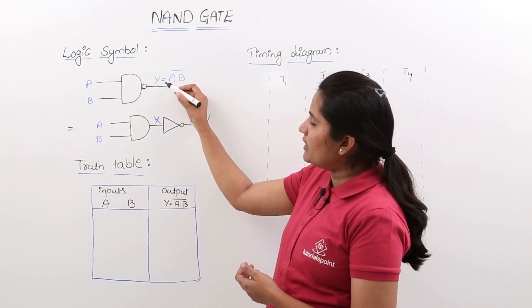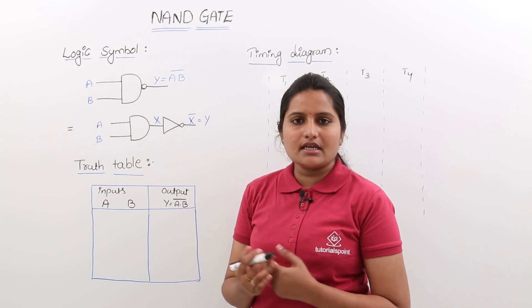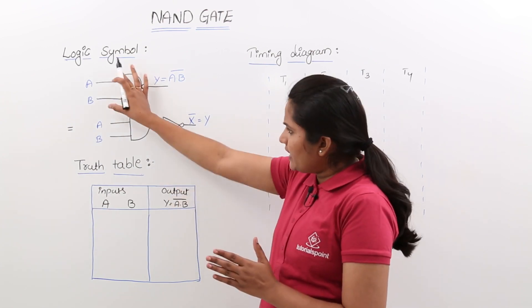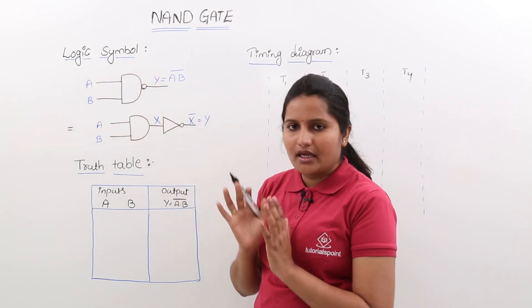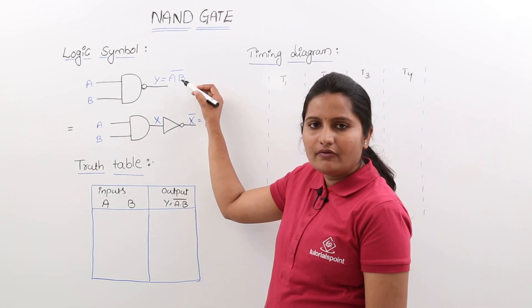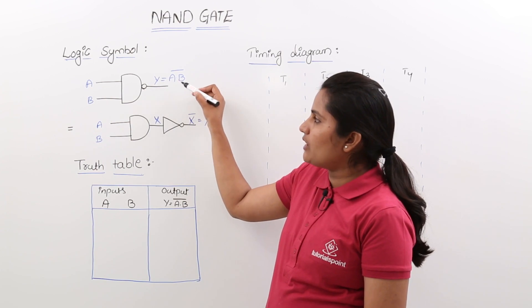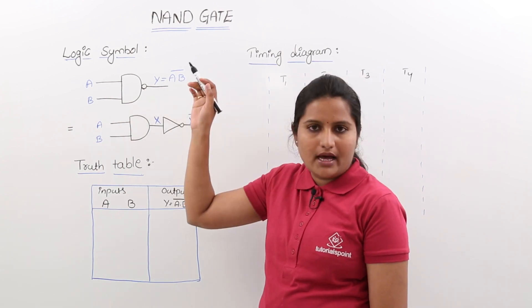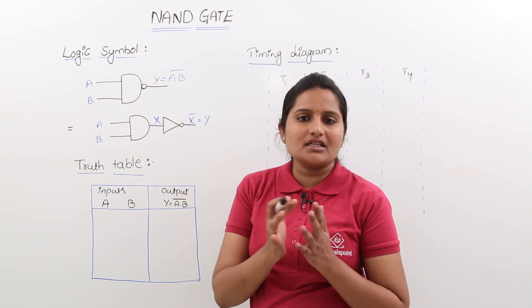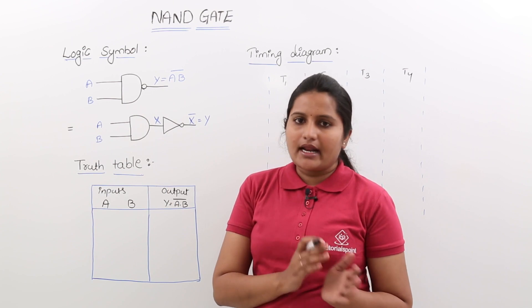If you are providing A and B as inputs to the NAND gate, you are getting the complement of the logical multiplication of those inputs. That means Y is equal to A into B whole bar. So complement of logical multiplication is what you get with the NAND gate.